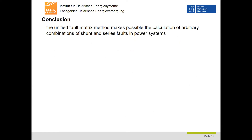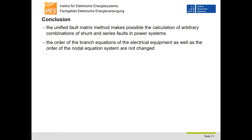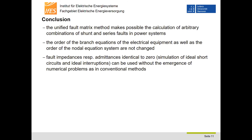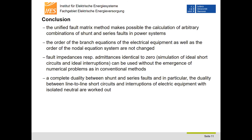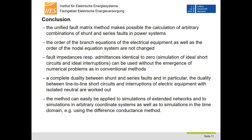To conclude, the unified fault matrix method makes possible the calculation of arbitrary combinations of shunt and series faults in power systems. The order of the branch equations of electrical equipment as well as the order of the nodal equation system are not changed. Fault impedances or fault admittances identical to zero, representing ideal short circuits or ideal interruptions, can be used without numerical problems. A complete duality between shunt and series faults — in particular the duality between line-to-line short circuits and interruptions of equipment with isolated neutral — is worked out. The method can easily be applied to extended networks, arbitrary coordinate systems, and time domain simulations, for example using the difference conductance method.